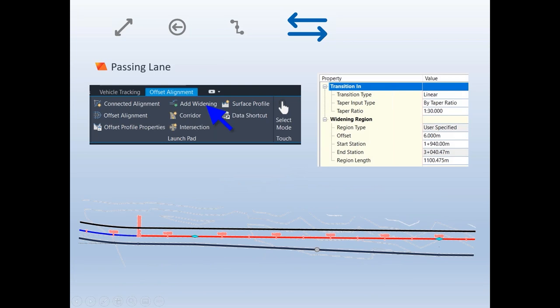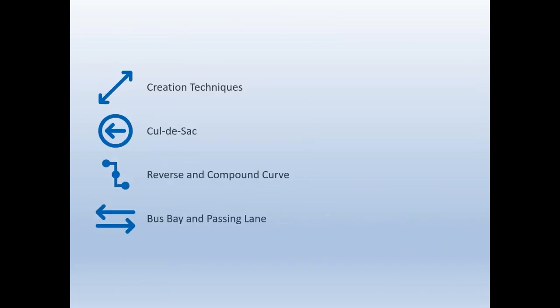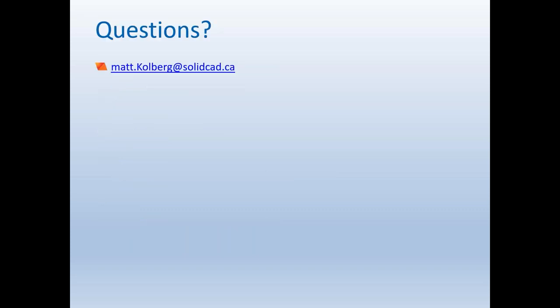To wrap up: today we covered alignment creation techniques including tangency issues and Solve PI, the use of parametric constraints, cul-de-sacs with fixed and free curves, reverse and compound curves, and finally alignment offsets for bus bays and passing lanes as well as offset profiles. Feel free to email our support team or reach out directly. A final question from the audience: can you convert an alignment back to a polyline once you're done using the alignment creation tool?